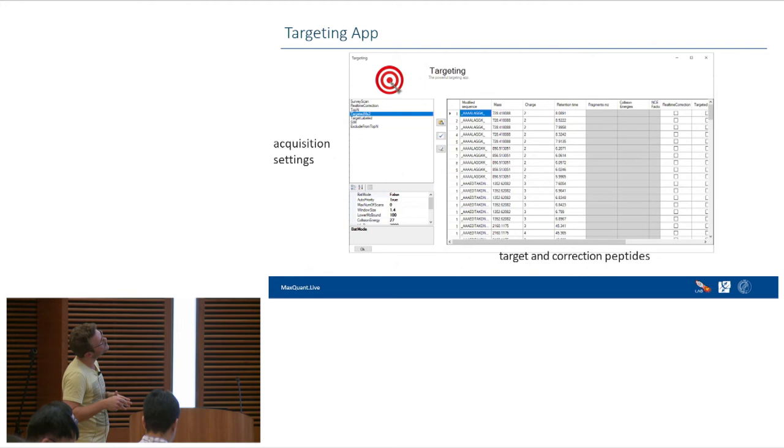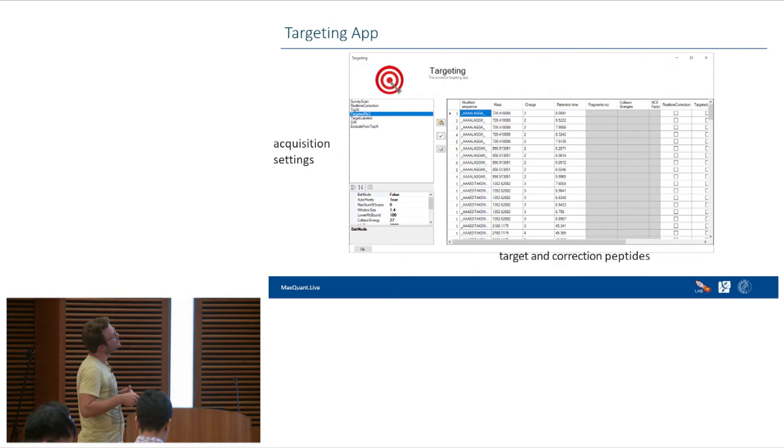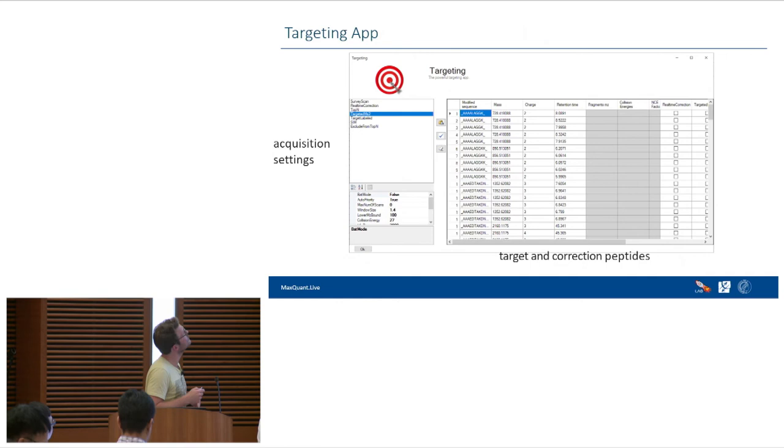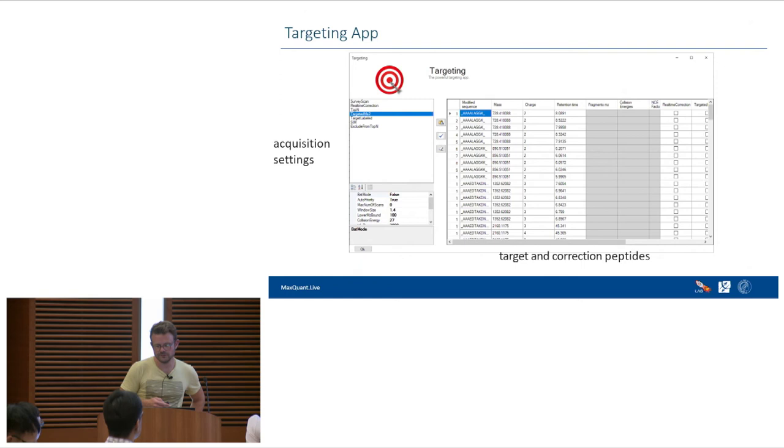So this is how you expect a targeting app to look. So we have a list of peptides which can contain target or correction peptides, and on the left there is all the settings for the acquisition strategy.